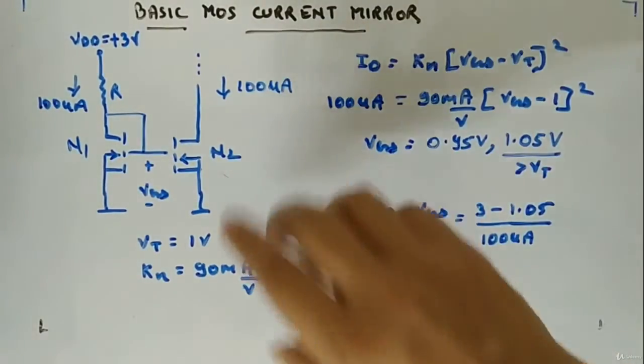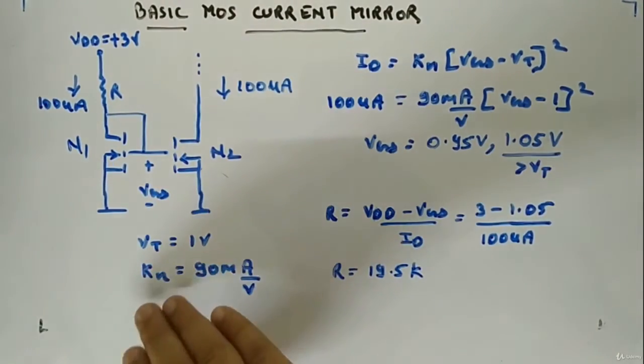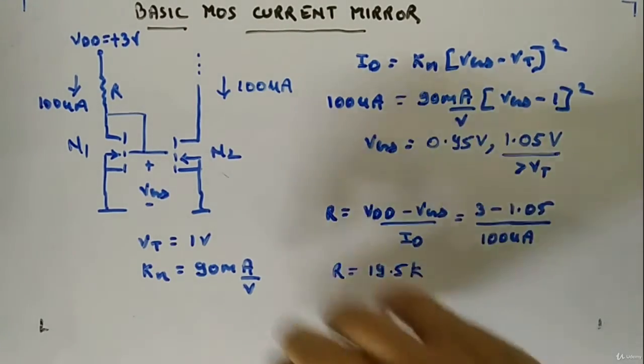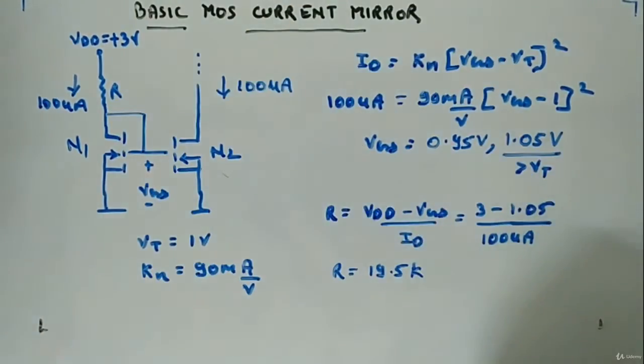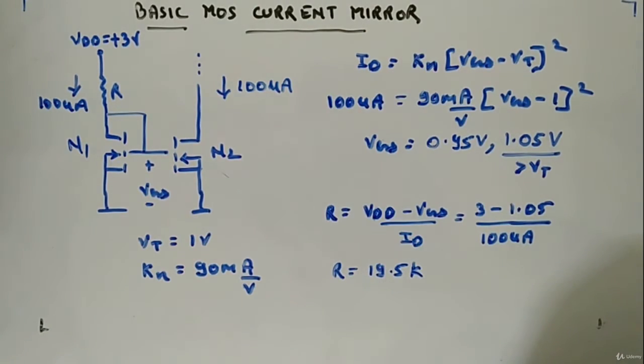So for this criteria we have R value of 19.5K. The MOSFETs will be modeled in threshold voltage and transconductance value. We have VGD is equal to plus 3 volt, so it should generate 100 microampere.